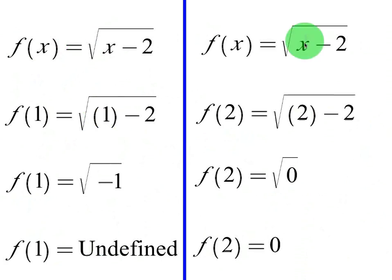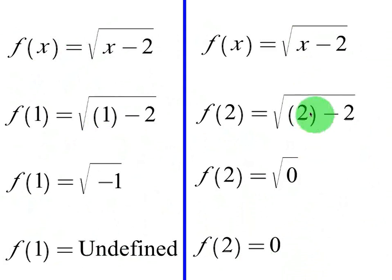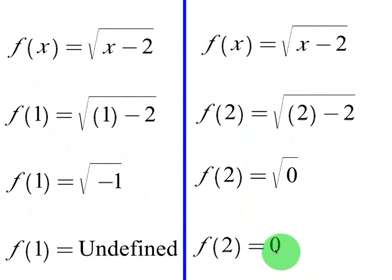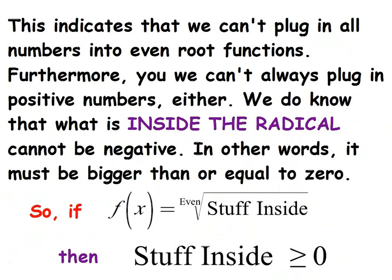We can plug in 2 and get 0 back, so the function does have a domain. But notice if you plug in anything less than 2, you're going to get a negative number back. This indicates that we can't plug in all numbers into even root functions — we can't always plug in positive numbers either.